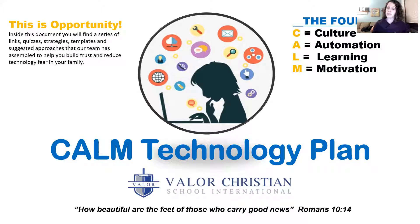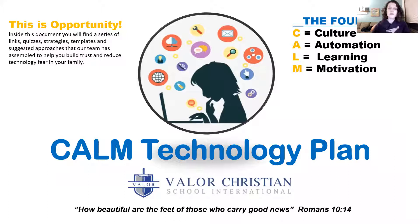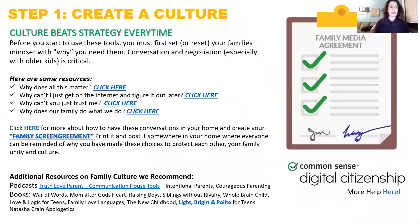The CALM technology plan: C stands for Culture, A is Automate — because I don't know how to do all the coding and checking and following, so I need something to automate and tell me what's going on with all my kids' devices. L is Learning — how do we learn through what the numbers show us. M is Motivate — how do we motivate our kids into right behavior with God, right positioning of their heart, right behavior towards us. This CALM plan will help you parents help your kids carry good news out through social media — light, bright, and polite.